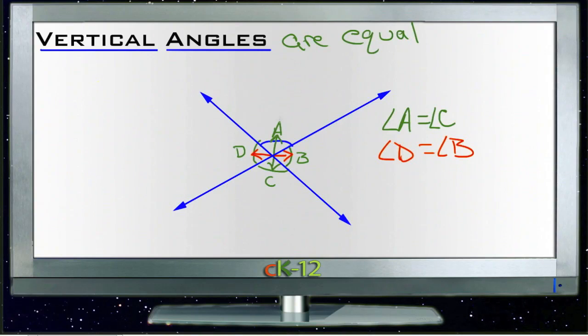So vertical angles are vertically straight across from each other. Unfortunately, they also can be horizontal across from each other, which makes it harder to remember. But the idea is that vertical angles are straight A-C-R-O-S-S across from each other.